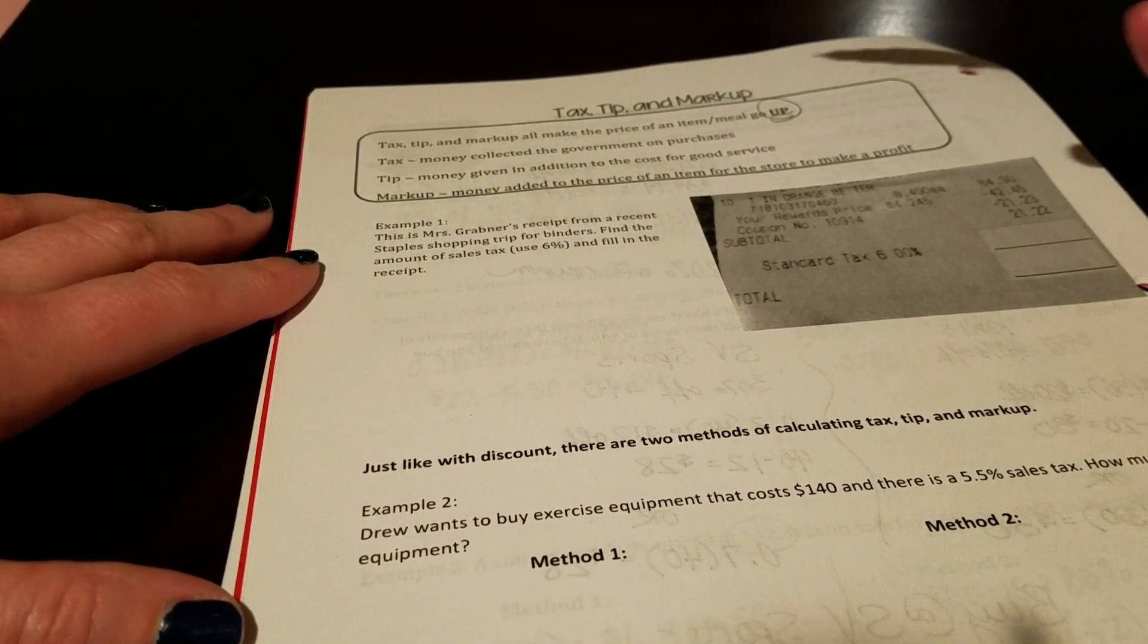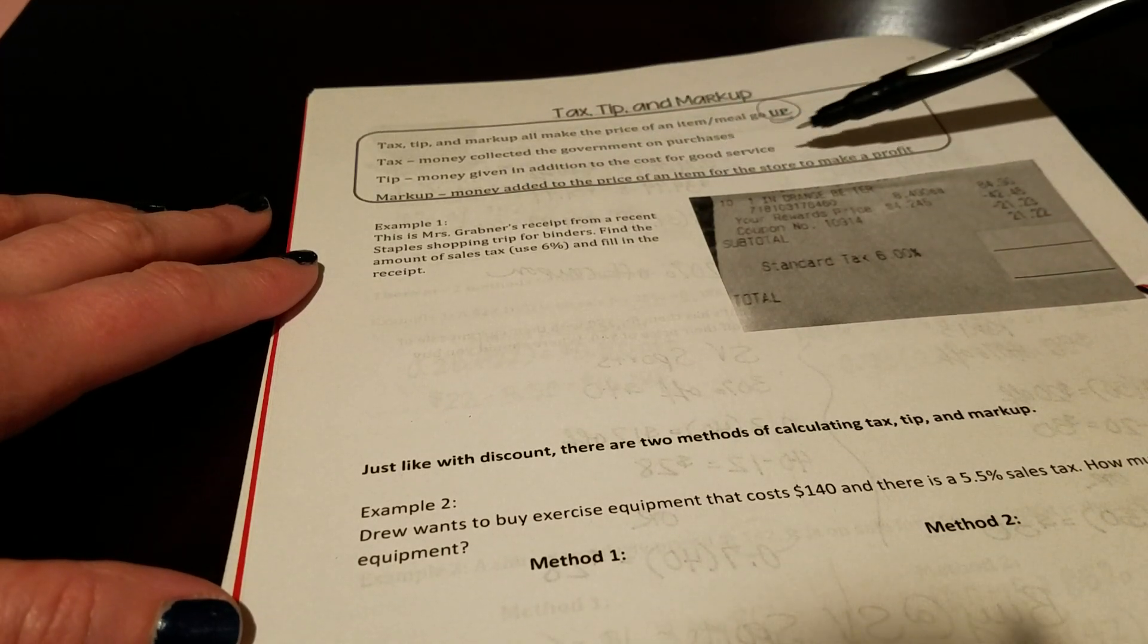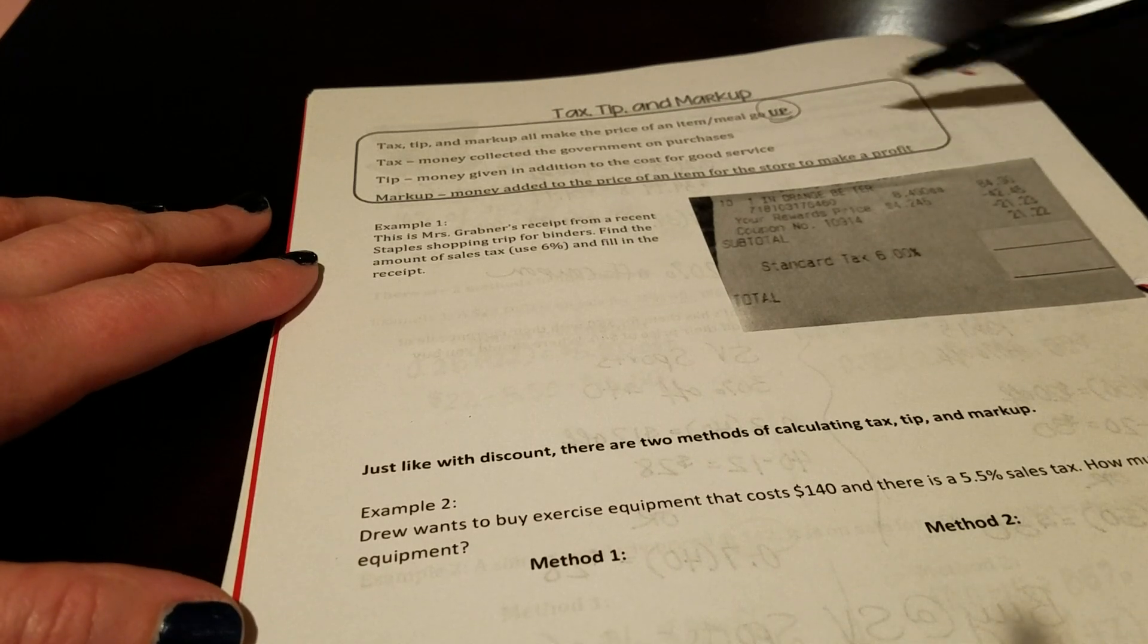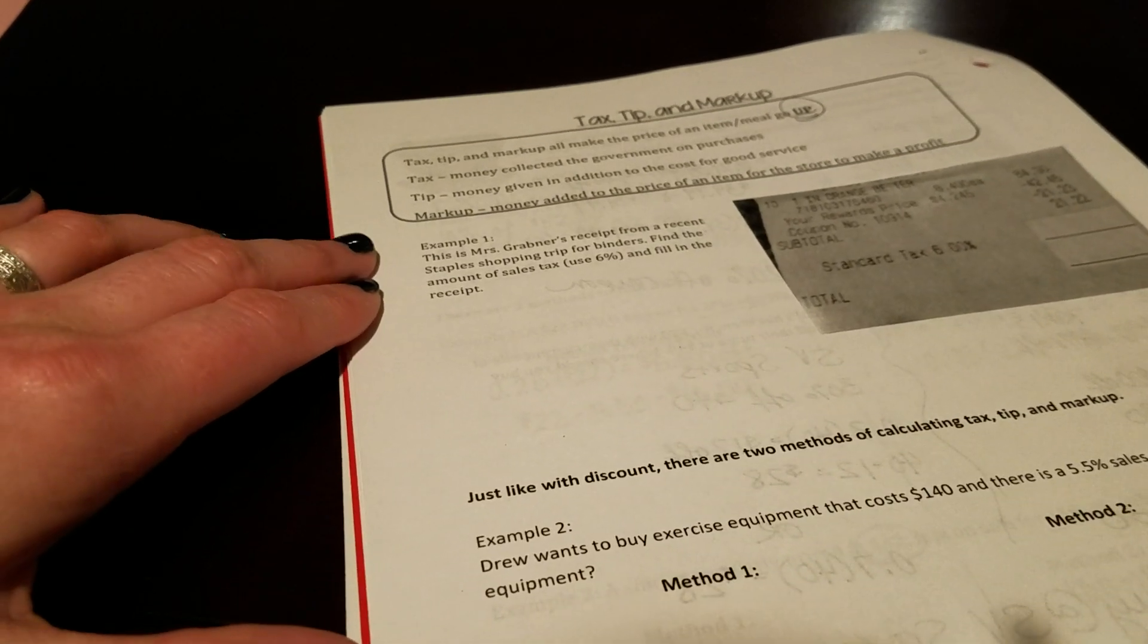So for example, if you go to buy an iPad, Apple will put a markup onto the item and then Target will also put a markup onto the item so that both Apple is making money and also Target's making money then too.